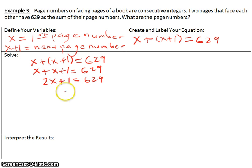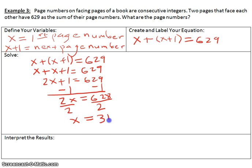Now we need to get X by itself, so we will subtract 1 on both sides. And we will have 2X equals 628. Our next step, we're still trying to get X by itself, so we would divide each side by 2. And we will have X equals 628 divided by 2 is 314.